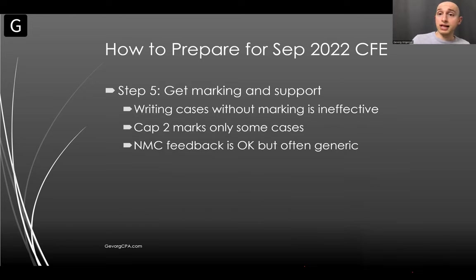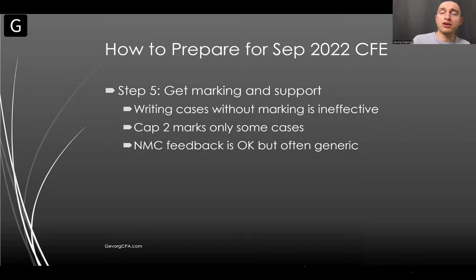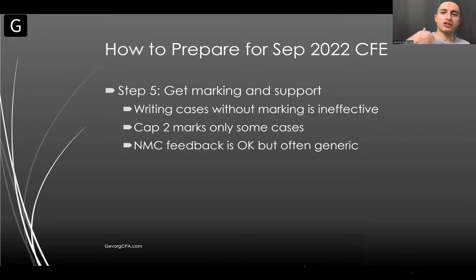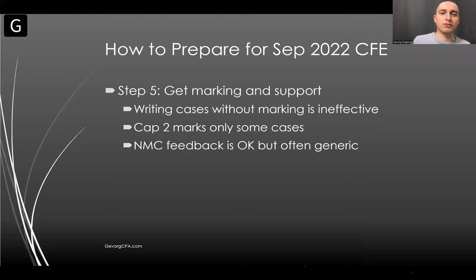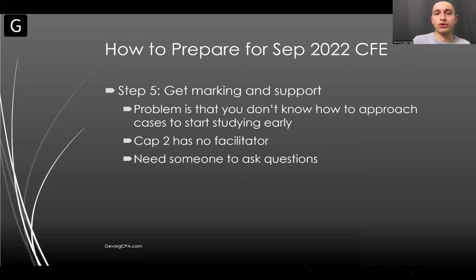The fifth step is to get marking and support if you want to. Capstone 2 is quite effective but it doesn't mark every case, the marking feedback is quite generic, and there's no real facilitator you can ask questions to freely. Discussion forums and other options exist but aren't very effective. That's why a lot of people seek extra support — you can get a tutor, sign up for a coaching program, or go to prep schools or prep programs. Any of those options will help.